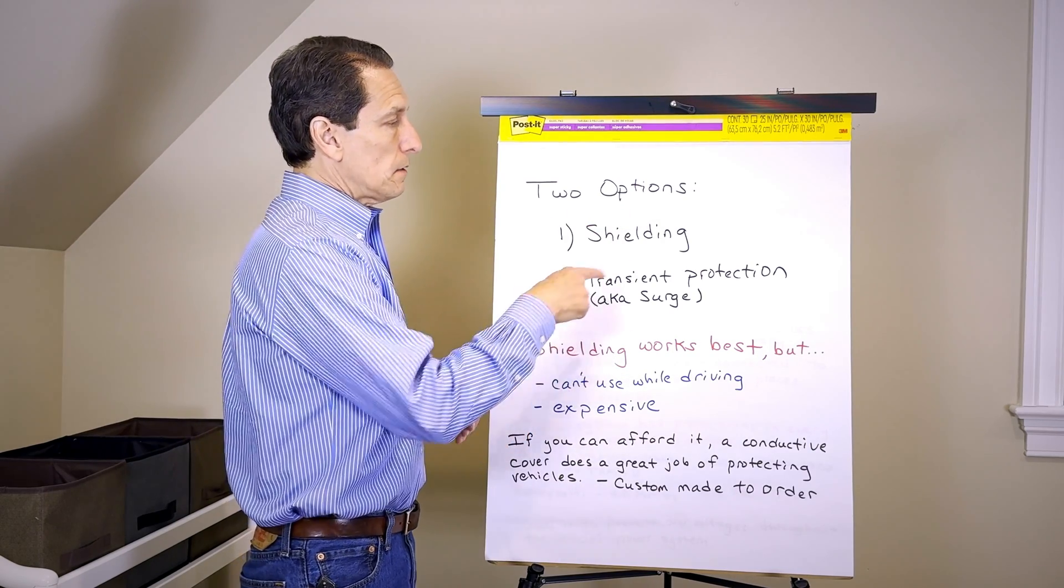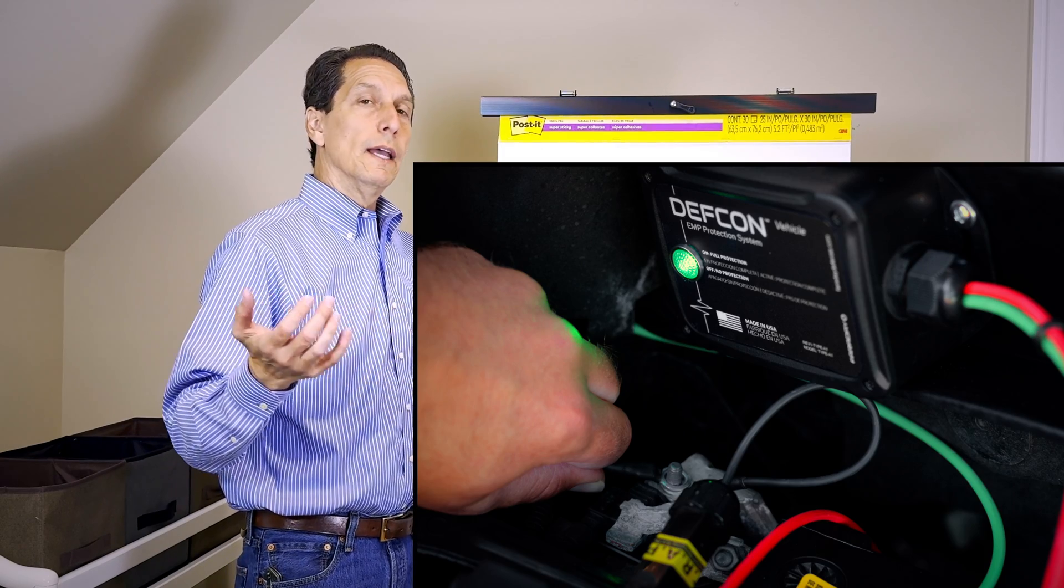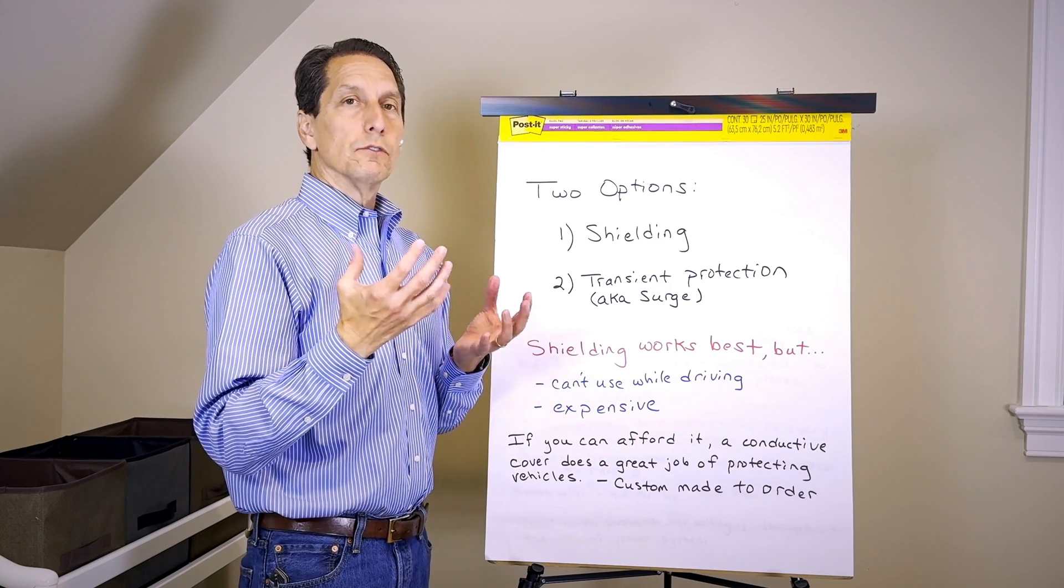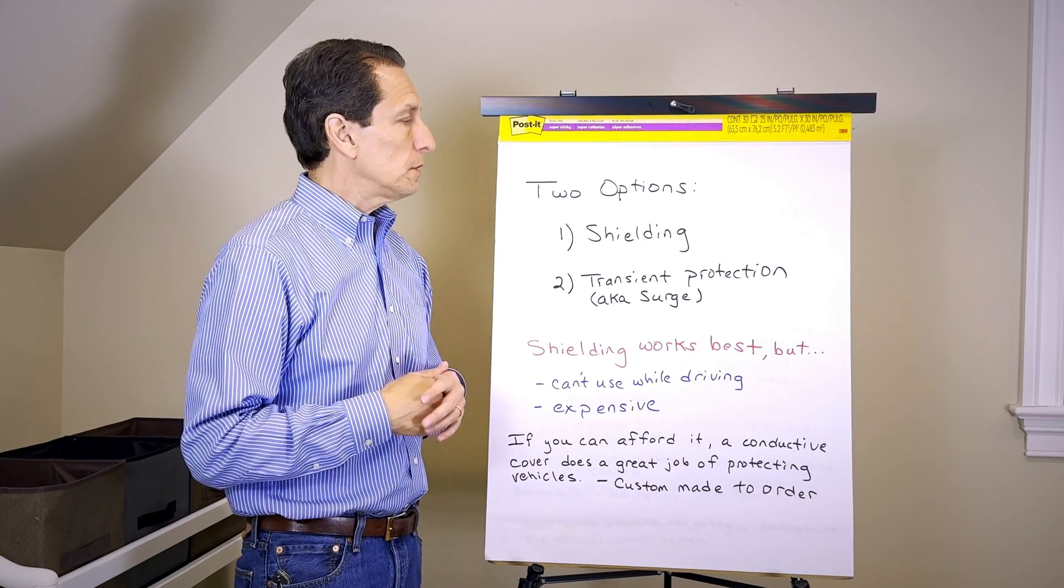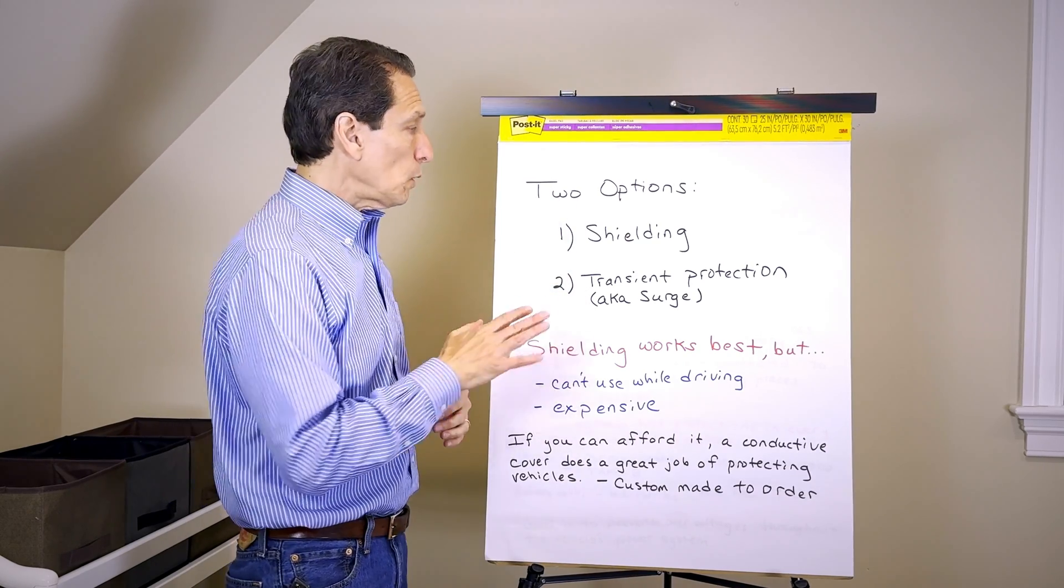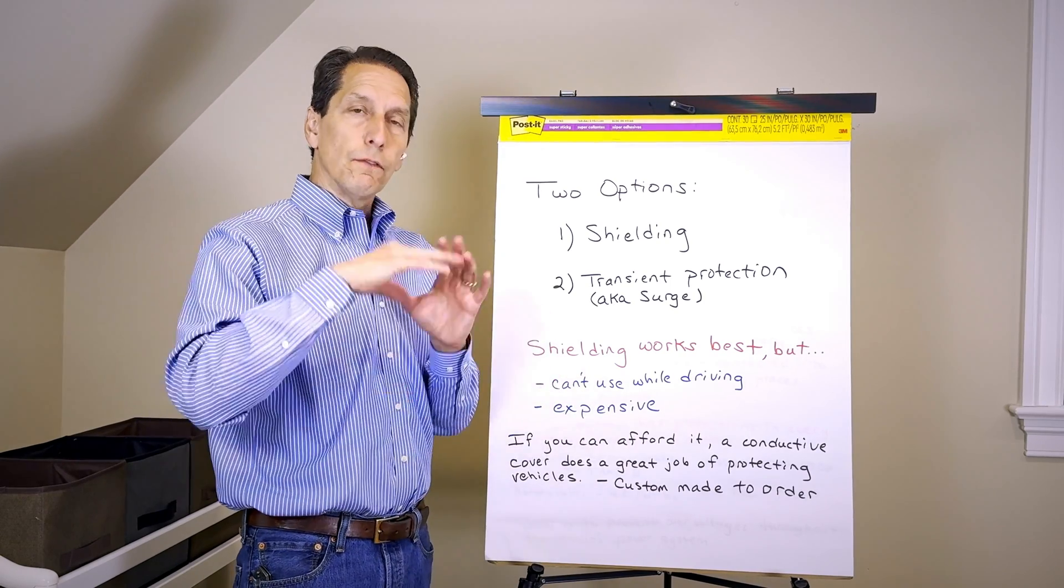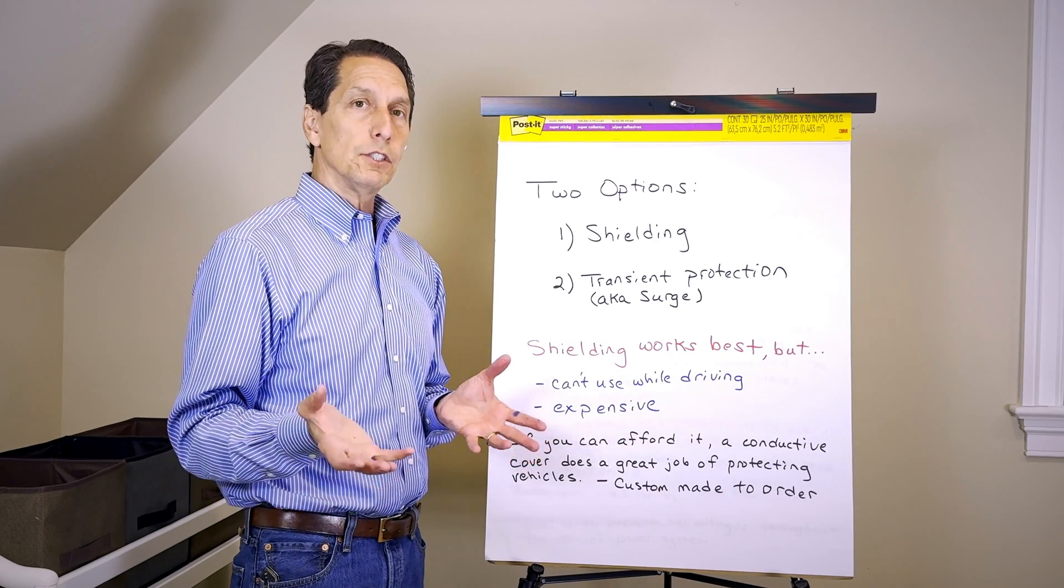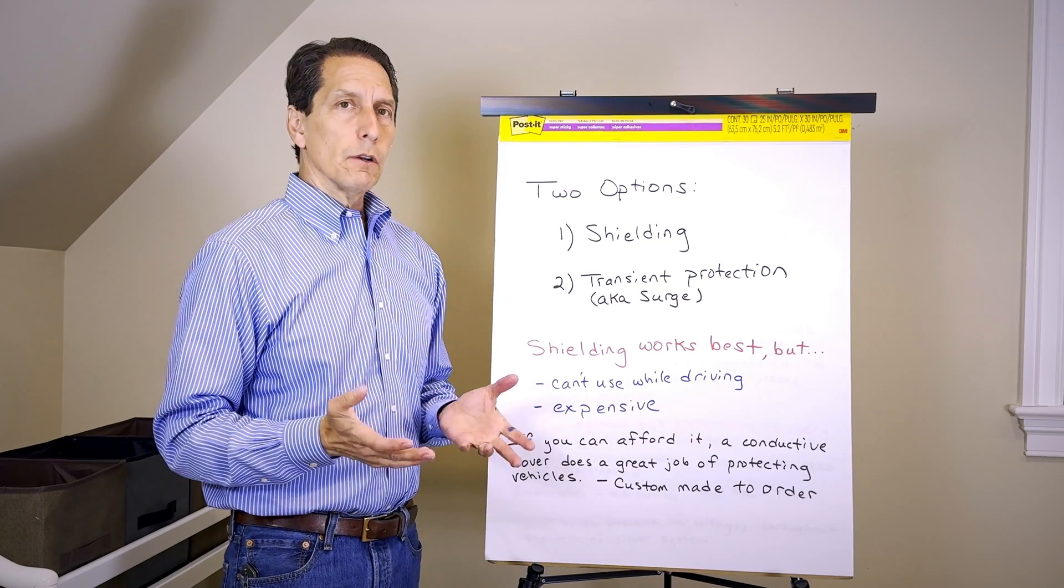The second method is transient or surge protection. The idea is as the energy couples into the wiring of the car, you want to shunt away or drain away that energy and limit the voltages. Of these two, shielding works the best without a doubt. You're fully enclosing your vehicle so all the systems are protected.